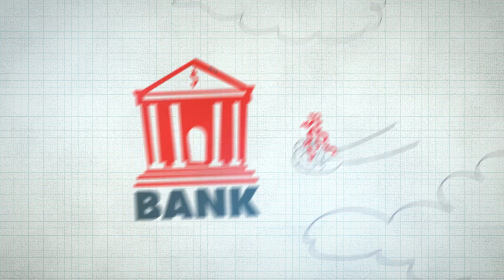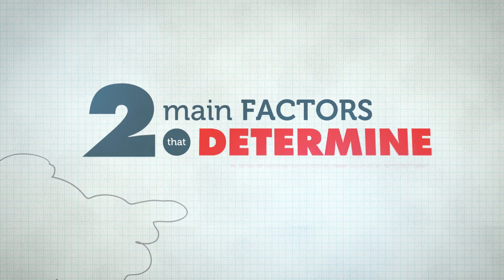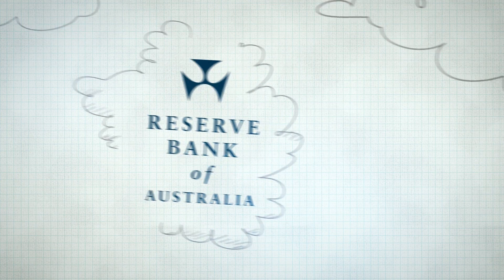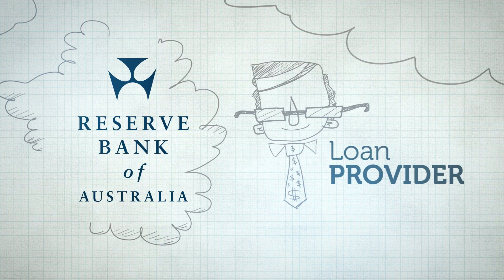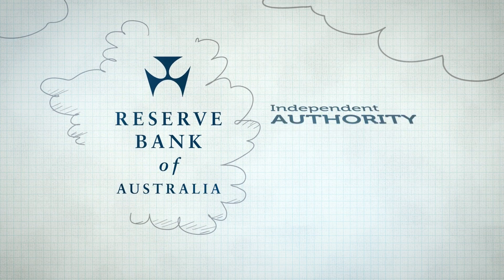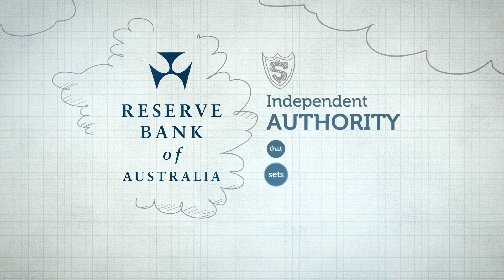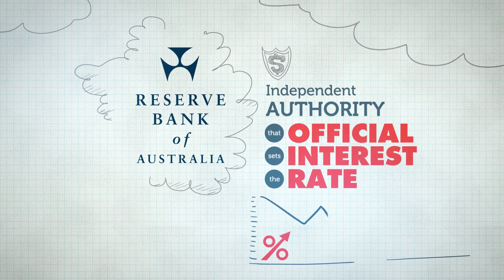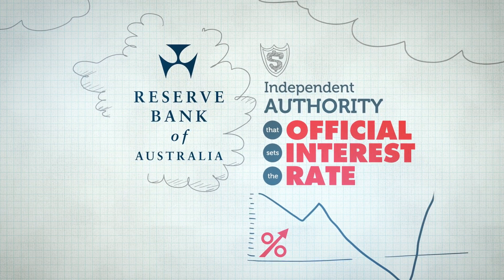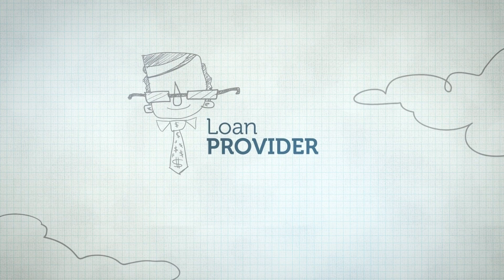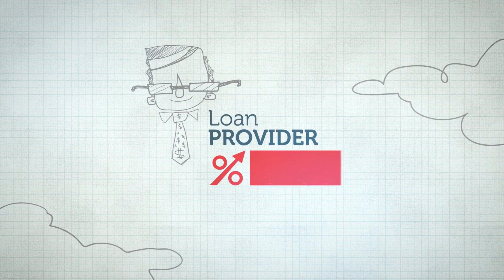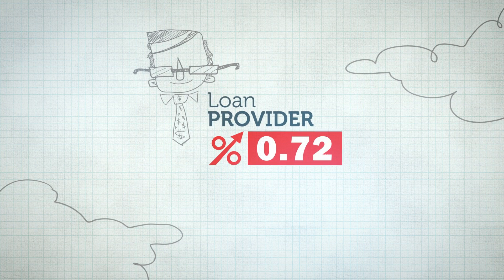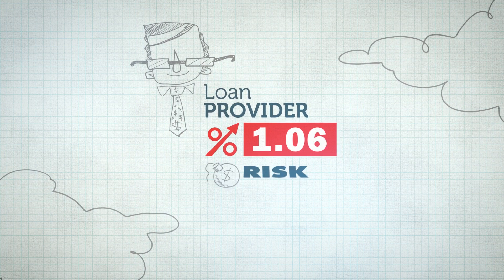There are two main factors that determine interest rates. The first is the Reserve Bank of Australia, and the second is the loan provider. The Reserve Bank of Australia is an independent authority that sets the official interest rate, and this really drives interest rates throughout the economy. The loan provider will then use the official interest rate and add a little bit according to the details of the loan — the risk, the length, and what you're actually purchasing.